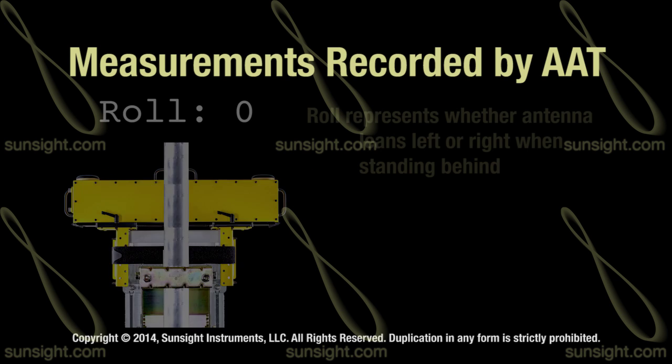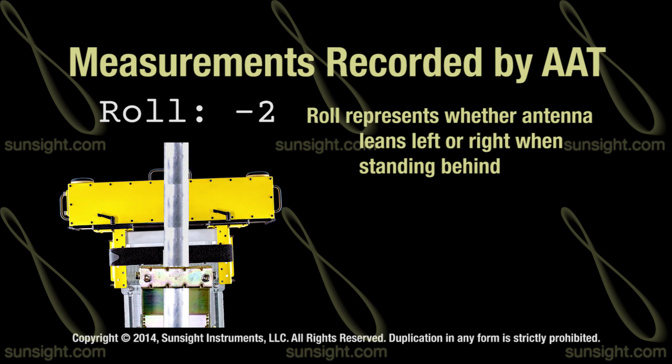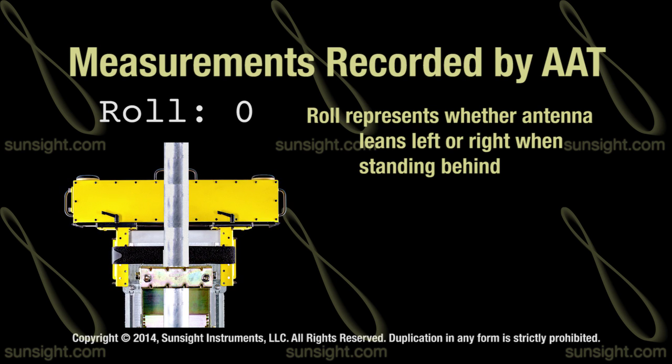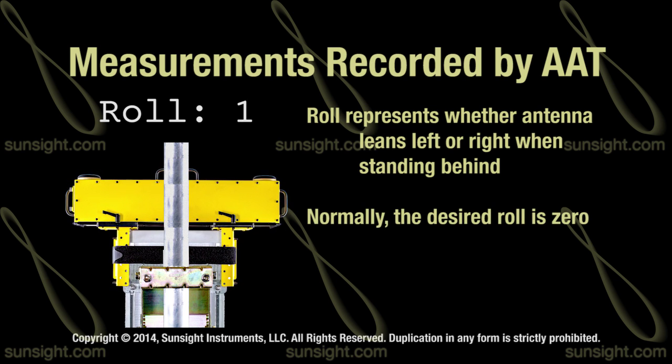Roll represents whether the antenna is leaning left or right when viewing the antenna from behind. Usually, the desired roll measurement is zero, or plumb.